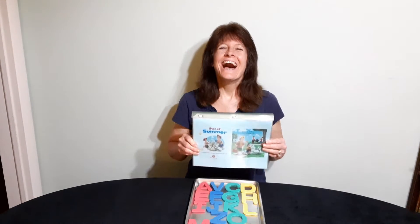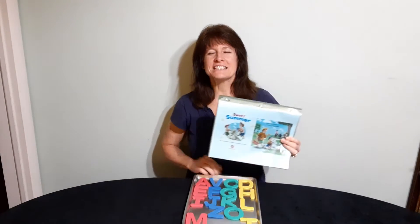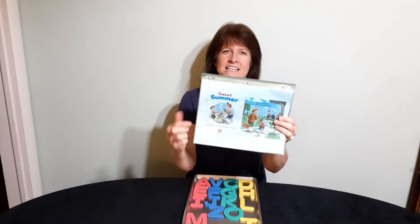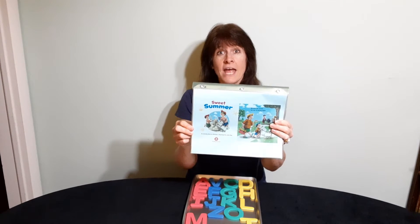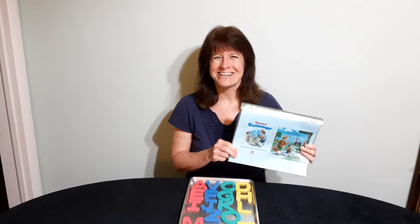We're going to get out our book, Sweet Summer, and get started on our lesson now. In our story Sweet Summer, there are a lot of words and they have different letters that they start with. We're going to look at some of the fun things that the dad and the son did in the book and find out what letter those fun things start with. Let's get started.